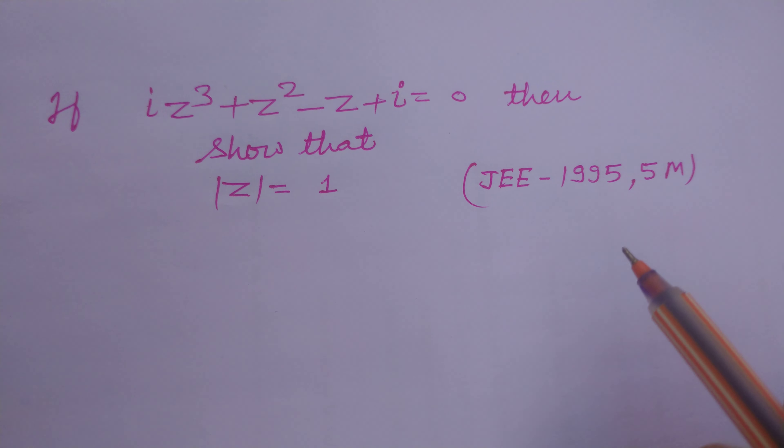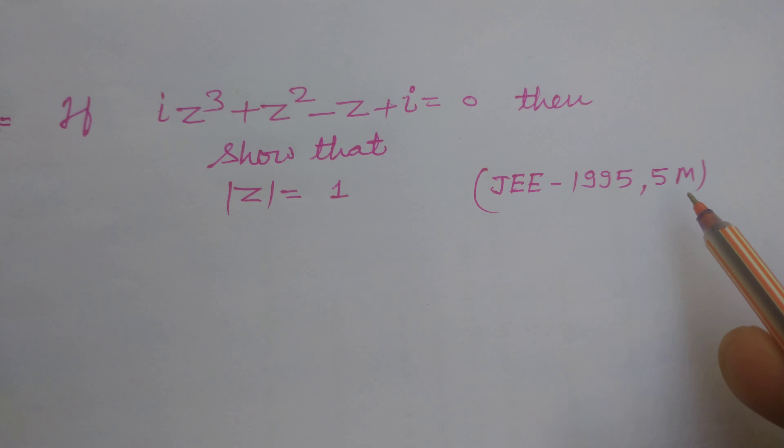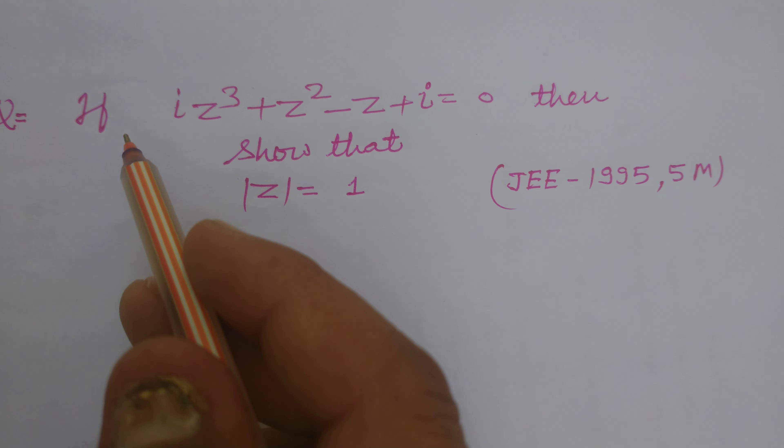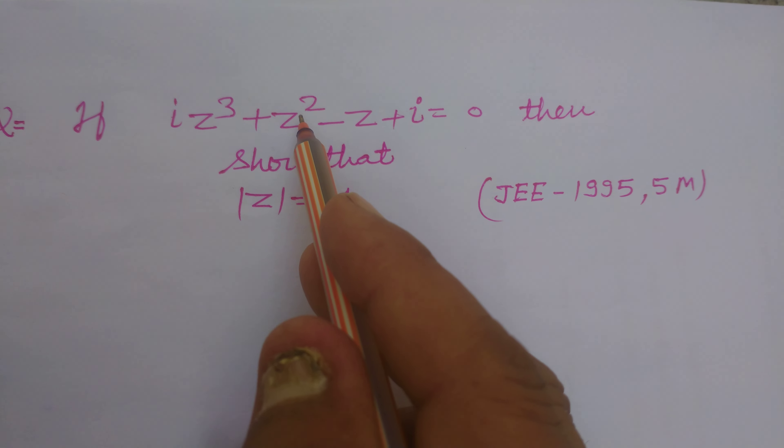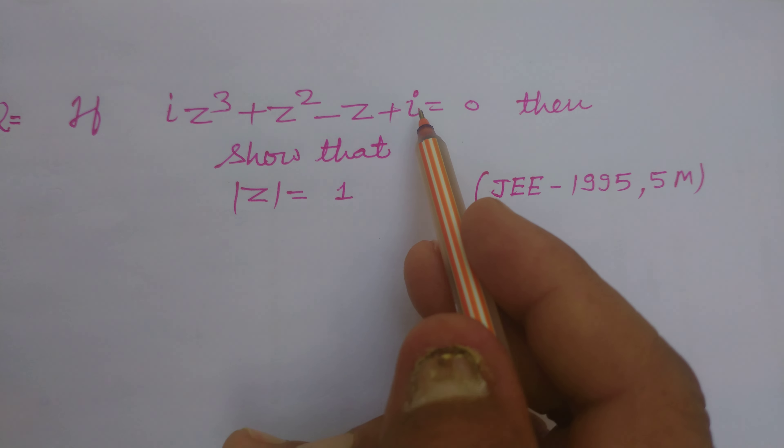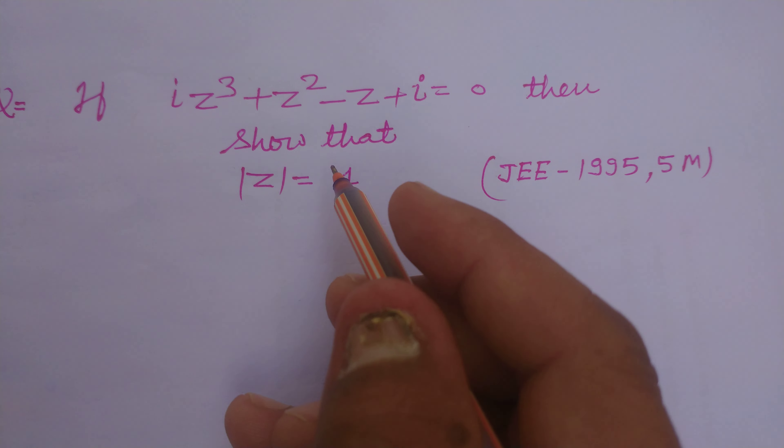Hello students, welcome to this YouTube channel. Here is a question from JEE 1995 for 5 marks. The question is based on complex numbers. If iota z cubed plus z squared minus z plus iota equals 0, then show that modulus of z equals 1.